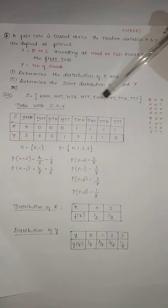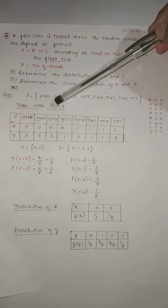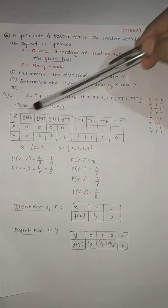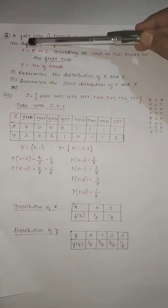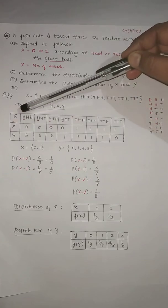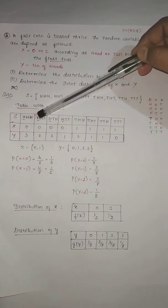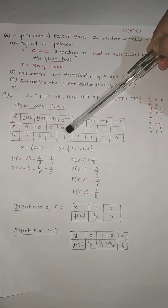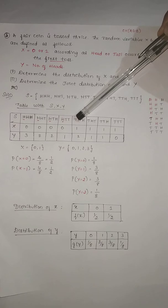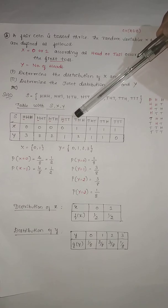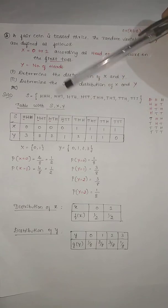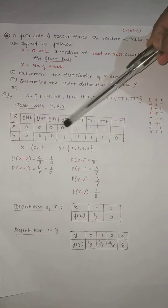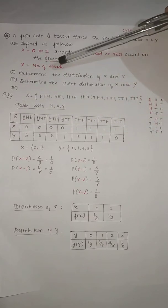Write one table with columns for the sample space S, X, and Y. X is 0 when you get head in the first toss — so for outcomes starting with H you write 0, 0, 0, 0. For outcomes starting with T as the first letter, you write X value as 1, giving 1, 1, 1, 1. After entering X values, move to Y.